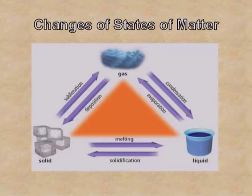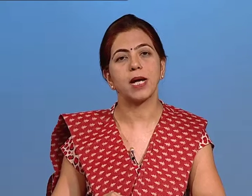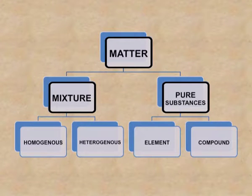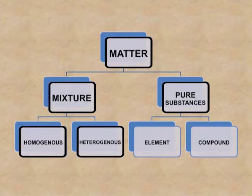All three states are interconvertible — we can change solid into liquid state, liquid into gaseous state, and vice versa. Matter is classified into mixtures and pure substances. Mixtures are further classified into homogeneous and heterogeneous mixtures. In both types, components are mixed in any ratio. In a homogeneous mixture, the composition is uniform and you cannot see the separate components. In a heterogeneous mixture, you can see the separate components, as the composition is not uniform throughout.